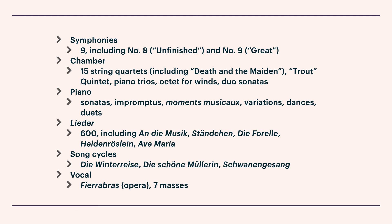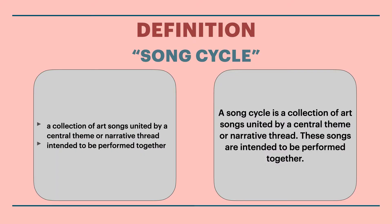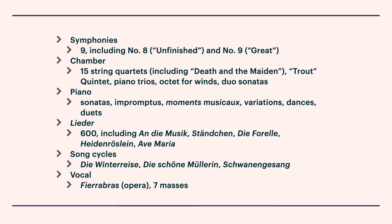Then we come to Song Cycle. A Song Cycle is a collection of art songs united by a central theme or narrative thread; these songs are intended to be performed together. It's sort of like a concept album — you want to play the entire thing together. Schubert's Song Cycles include Die Winterreise, Die Schöne Müllerin, and Schwanengesang.